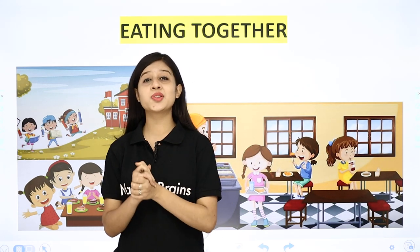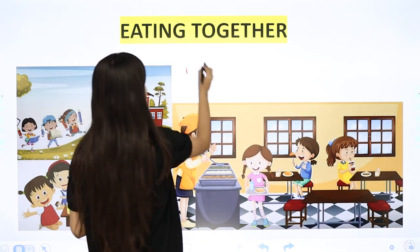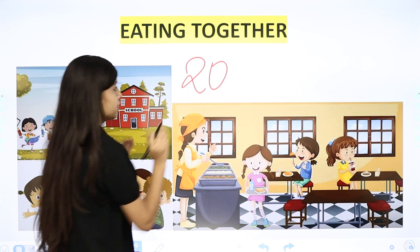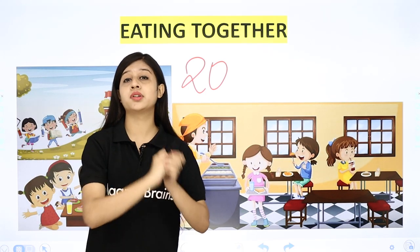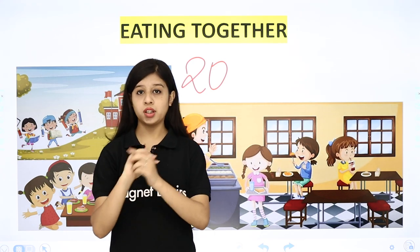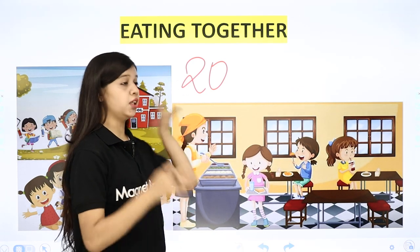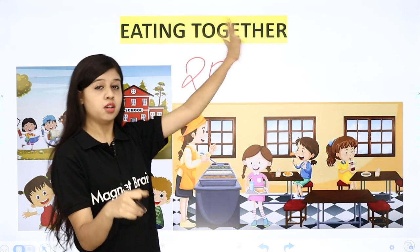Hey kids, welcome back to Magnet Brains. This is Khushi and today we are going to discuss a new chapter — Chapter 20. Book is 'Looking Around' Environmental Studies ka Chapter 20, aur naam hai Eating Together.